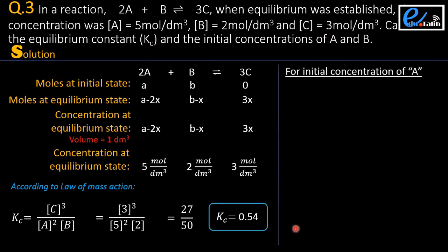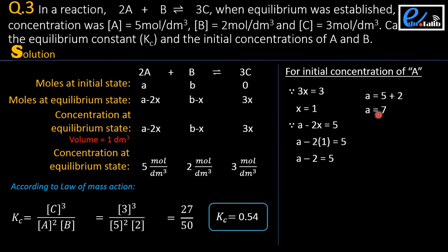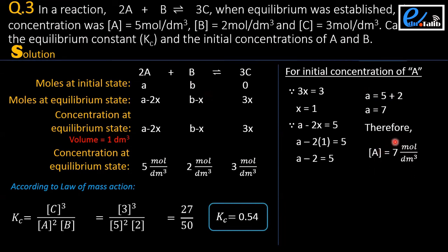For the initial concentration of A: 3x equals 3, so x equals 1. Then A minus 2x equals 5. Putting x equals 1 into this equation, the value of A is 7. The initial moles of A is 7. Since the volume is 1 dm³, the initial concentration of A is 7 moles per dm³.